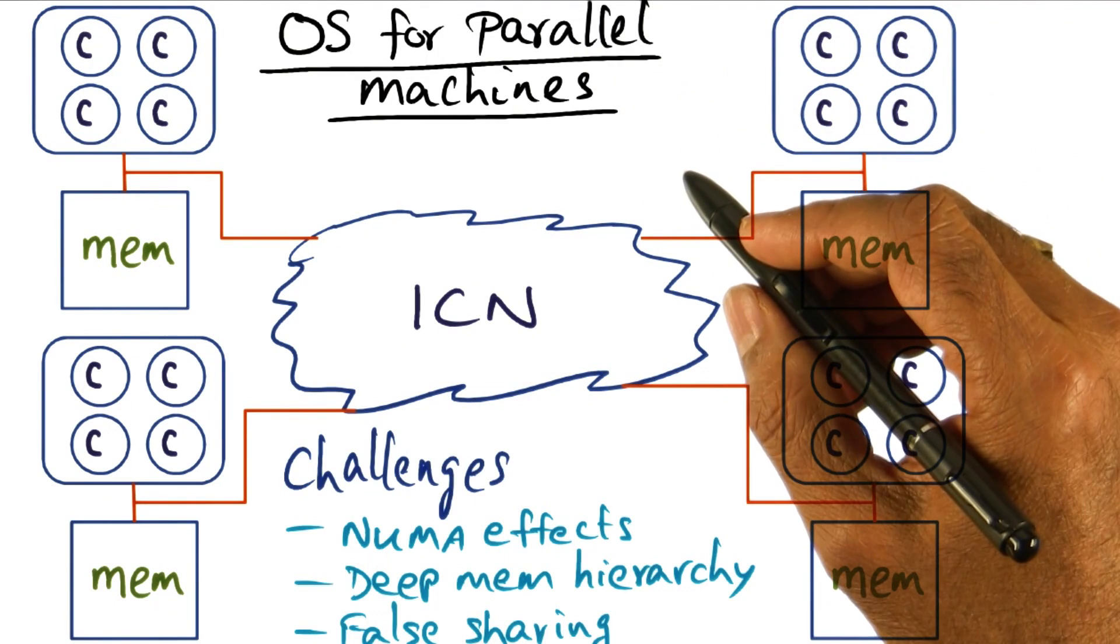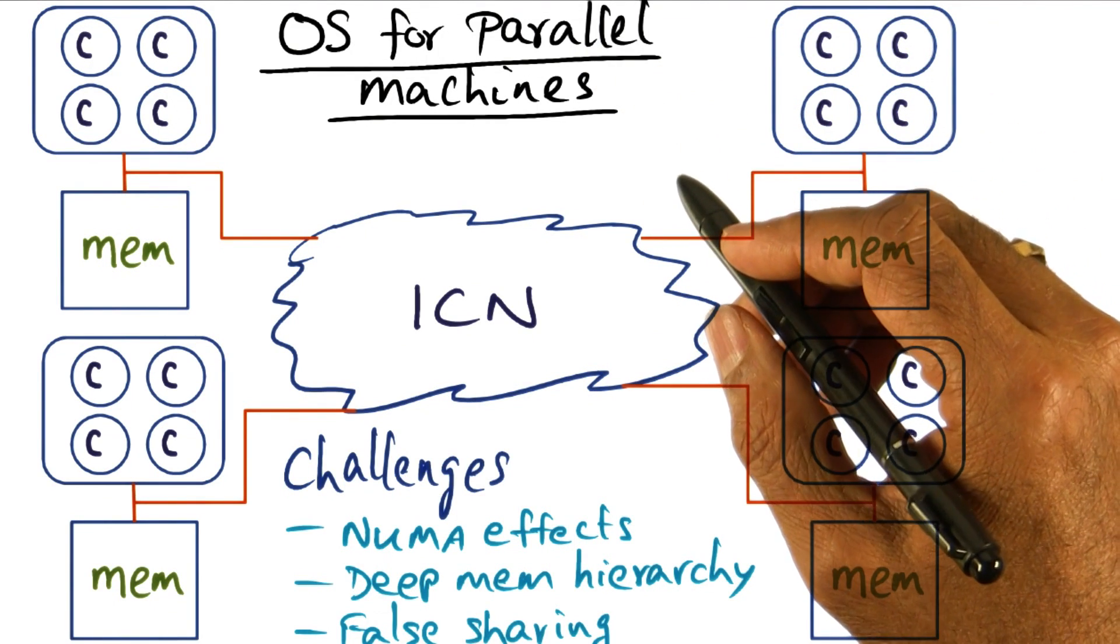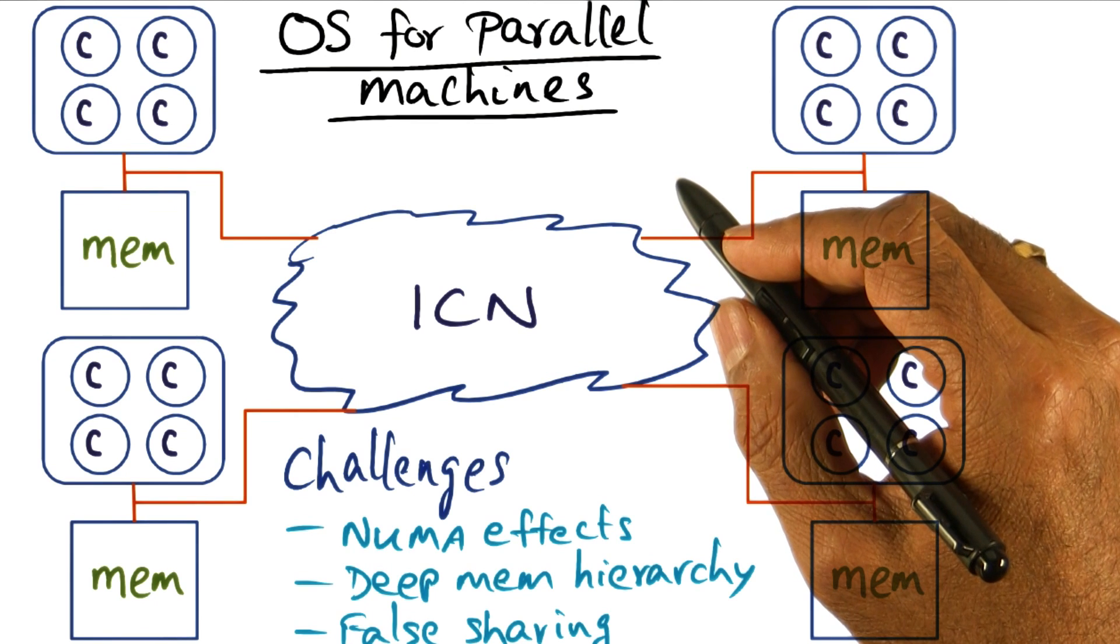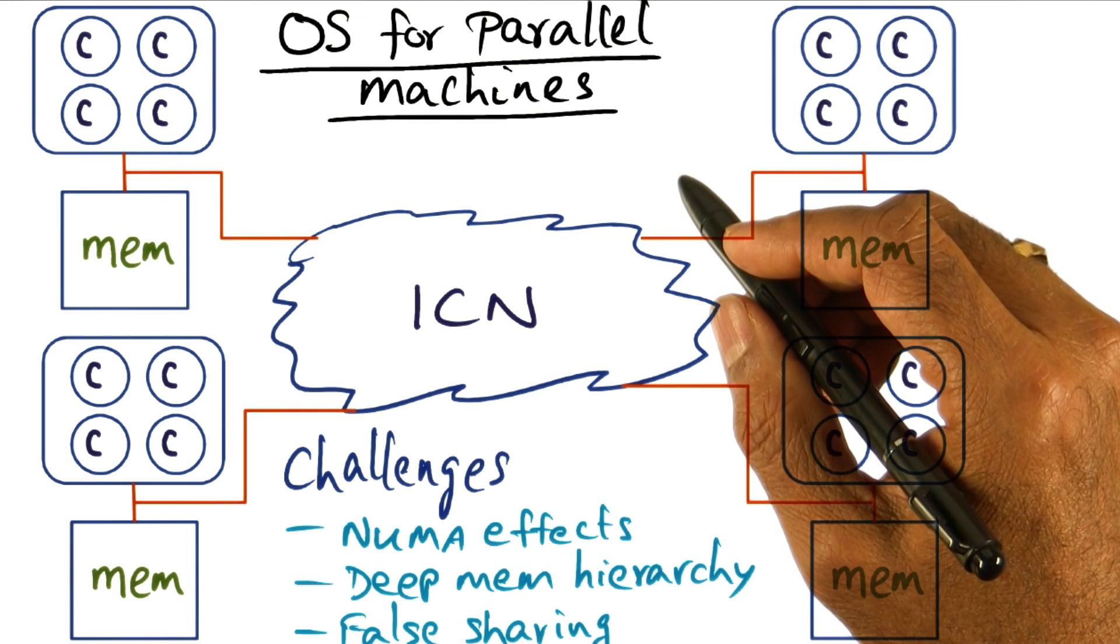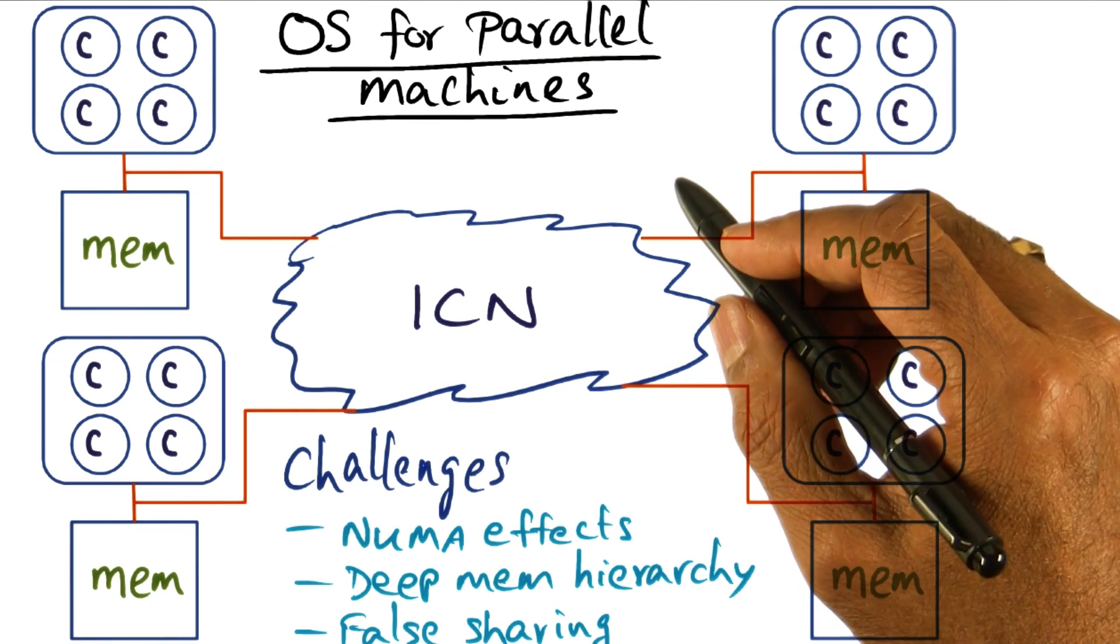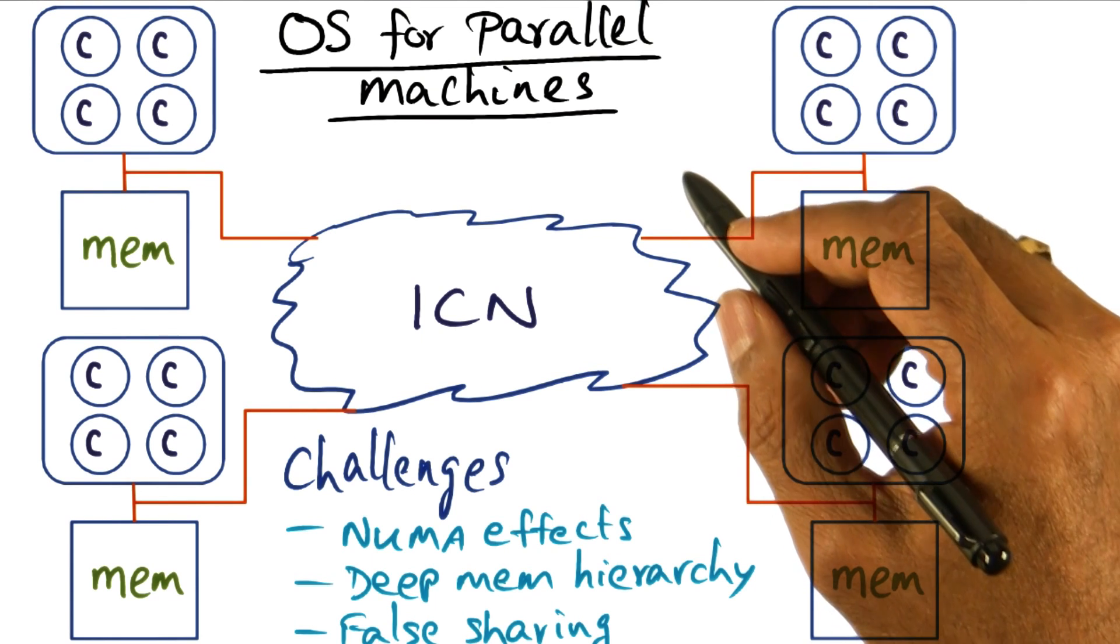Modern parallel machines offer a lot of challenges in converting the algorithms and techniques that we have learned so far into scalable implementations. What are some of these challenges?